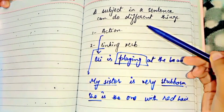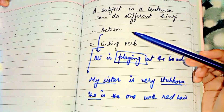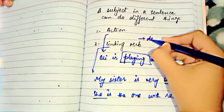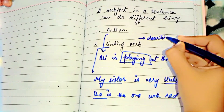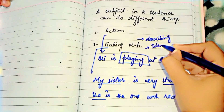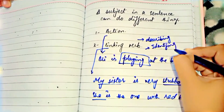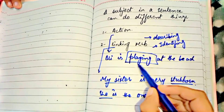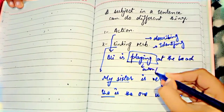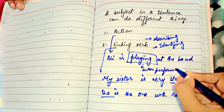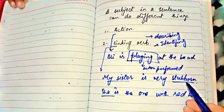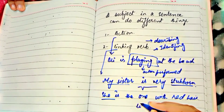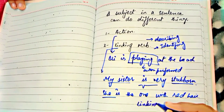Now let's look at the functions of a subject. A subject in a sentence can do different things — number one: action, and number two: linking words. Linking words are used to describe or identify. Example of action: 'Ali is playing at the beach' — 'playing' is the action performed, and 'Ali' is the subject performing the action. Example of linking verbs: 'My sister is very stubborn; she is the one with the red hair' — here a linkage is shown between two sentences.